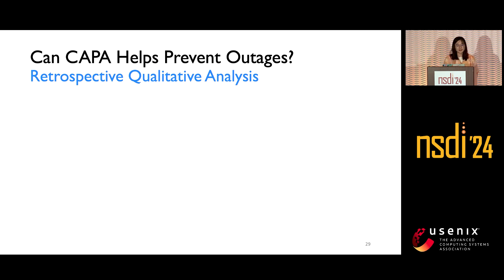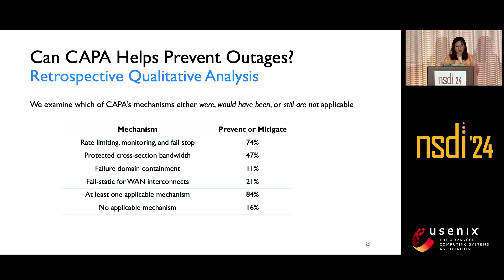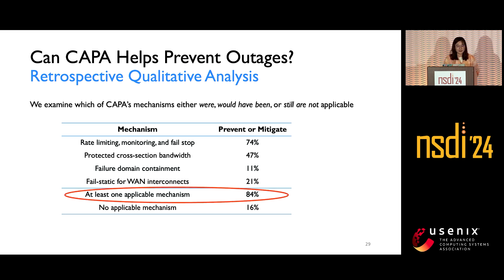We also did a qualitative study of past outages, examining which KAPPA mechanisms either were, would have been, or are still not applicable to each incident. The results show that about 84% of incidents could have been prevented or mitigated by KAPPA. Notably, this also shows that each individual mechanism is necessary to address some category of failures.